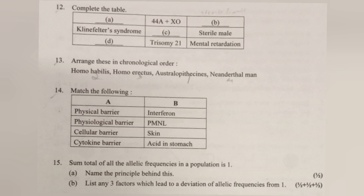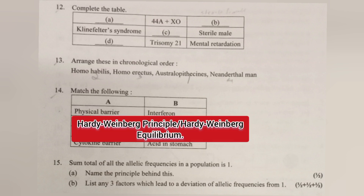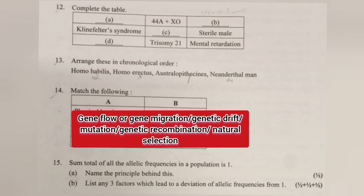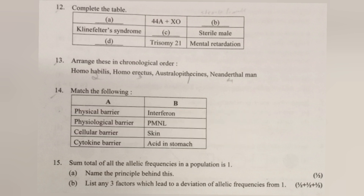Question 15: The sum total of all allelic frequencies in a population is one. A. Name the principle behind this — Answer: Hardy-Weinberg Principle or Hardy-Weinberg Equilibrium. B. List any three factors which lead to deviation of allelic frequency from one — Answer: Gene flow/gene migration, genetic drift, mutation, genetic recombination, natural selection — write any three.